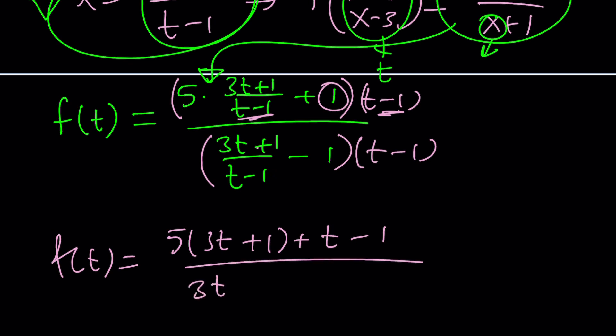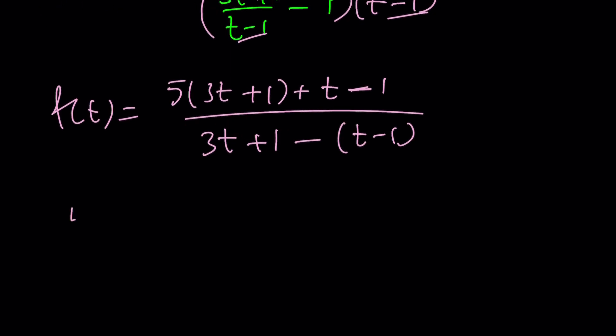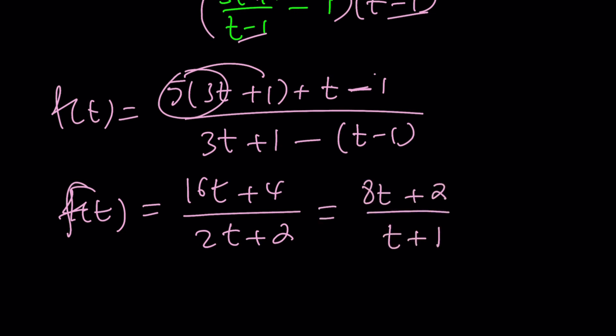At the bottom, you're going to have (3t+1) times (t-1) and then minus (t-1). By the way, I forgot to cancel these out. These two are going to cancel out, so I'm going to end up with 3t+1 minus (t-1). So that's f of t. Let's simplify it. If you simplify this, you're going to get something like 15t plus t, that's 16t, plus 5 minus 1, that's plus 4. 3t minus t is 2t. 1 plus 1 equals 2. We can divide everything by 2. 8t plus 2 divided by t plus 1. Awesome.